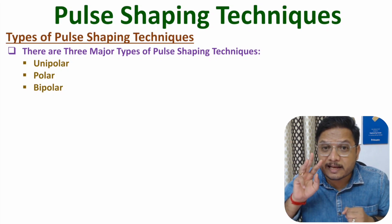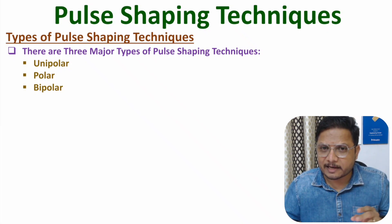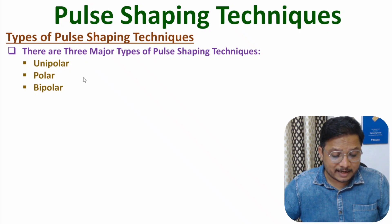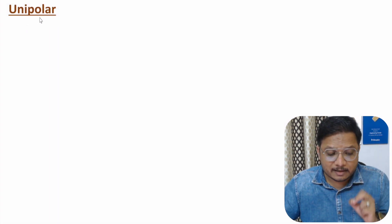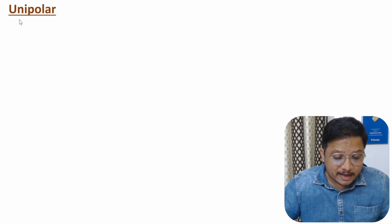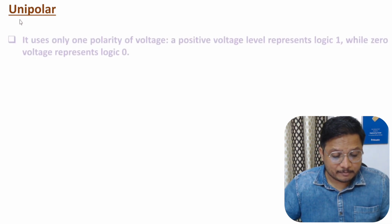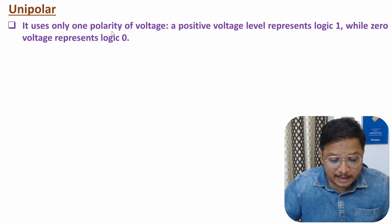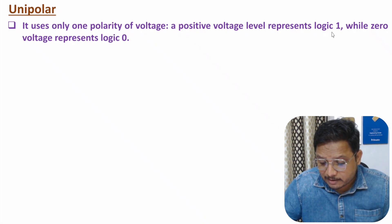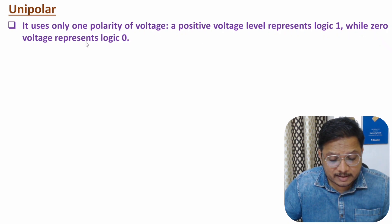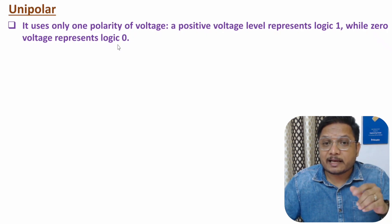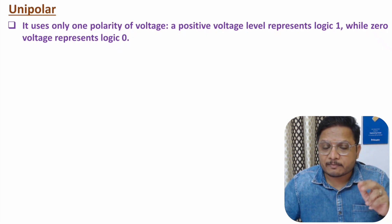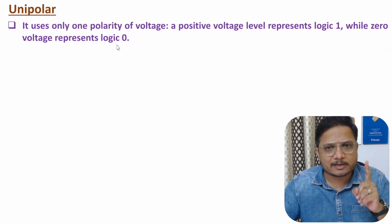I will explain these three categories of pulse shaping techniques with great clarity. First, let me explain the first category, that is unipolar. From the name itself you can understand — uni means one. So here we have only one polarity; it uses only one polarity of voltage. A positive voltage level represents logic one, while zero voltage represents logic zero.